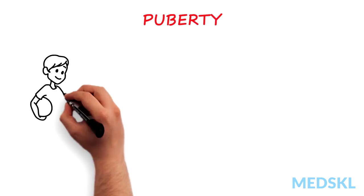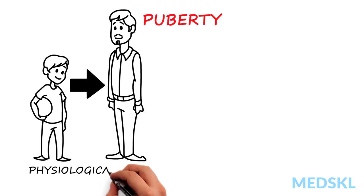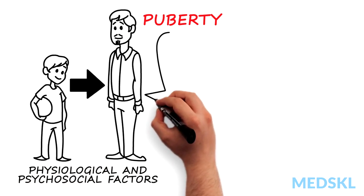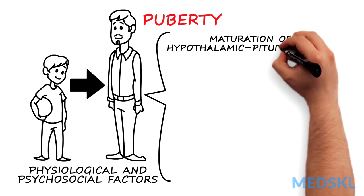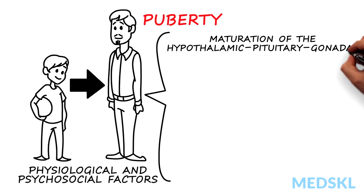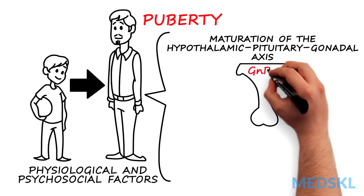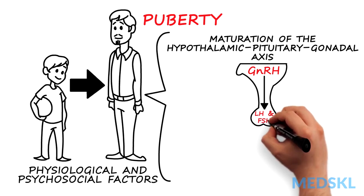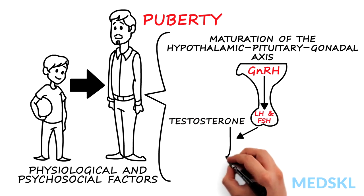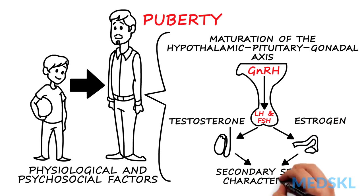Puberty is the normal and expected transition from childhood to adolescence and involves both physiological and psychosocial factors. Normal pubertal development begins with maturation of the hypothalamic-pituitary-gonadal axis. Pulsatile release of gonadotropin-releasing hormone stimulates release of luteinizing hormone and follicle-stimulating hormone, which induce the maturation of the gonads. Subsequent production of sex steroids begins the development of secondary sexual characteristics.